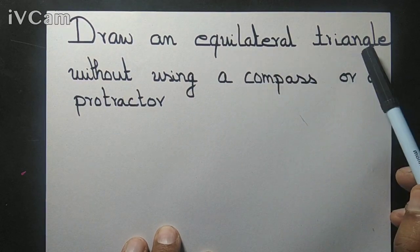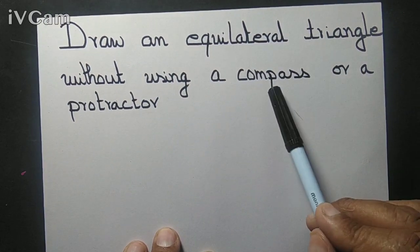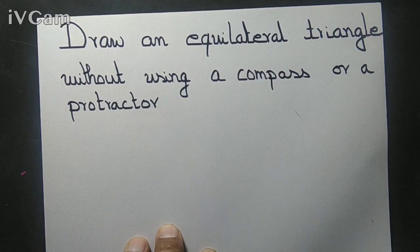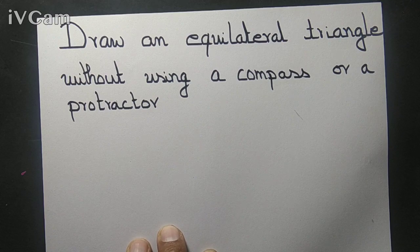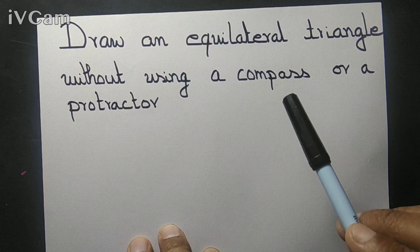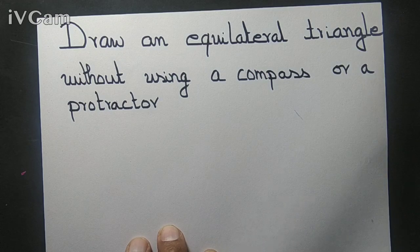Can we draw an equilateral triangle without using a compass or a protractor? In other words, we want to draw an equilateral triangle, but we can neither use a compass nor a protractor. The answer is yes.